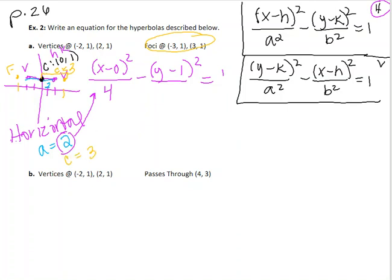Well, my standard form equation, I need b squared. So what you actually have to do is use your supplemental formula for c, which in a hyperbola is a squared plus b squared. And so, plug in 3. 3 squared is 9 equals 2 squared, which is 4, plus b squared.